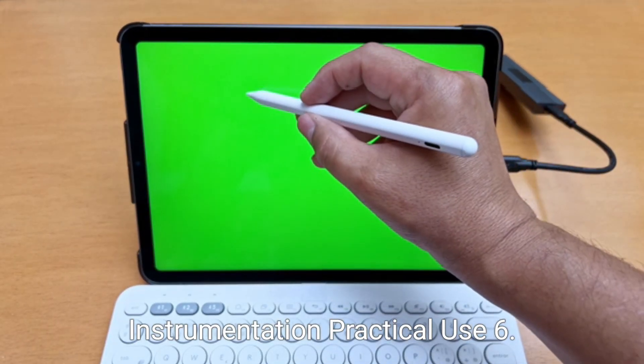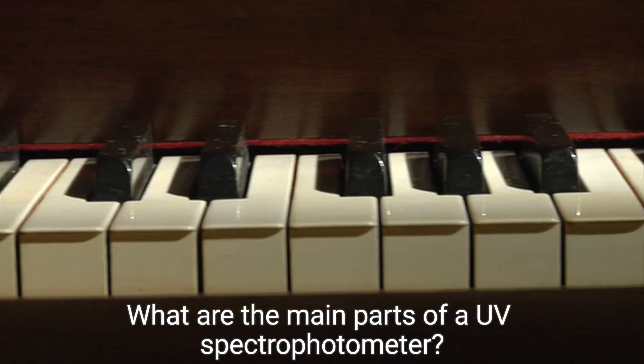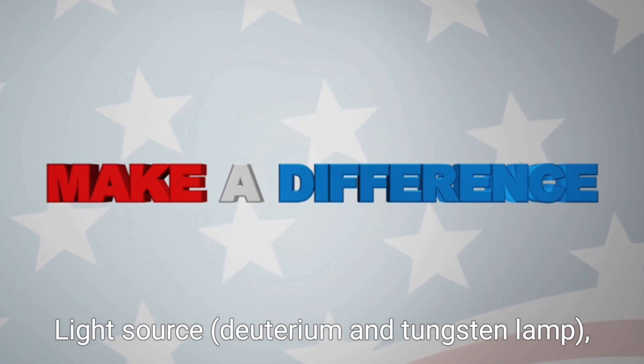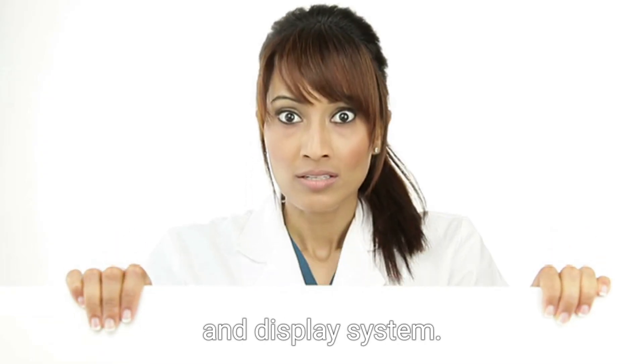Instrumentation and practical use. What are the main parts of a UV spectrophotometer? Light source, deuterium and tungsten lamp, monochromator, sample holder, detector, and display system.